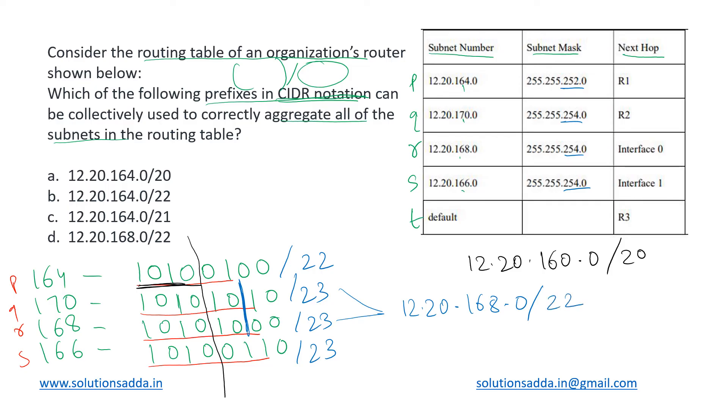Looking at subnets P and S, they are also having their first six bits the same. They are differing in their seventh bits, so these two can be combined together to give 12.20 dot—what is the value of their first six bits? It is 160 plus 4, so 164 dot 0 and slash 22. This is how we can combine subnets P and S together, and we combine Q and R together.